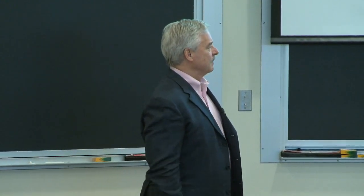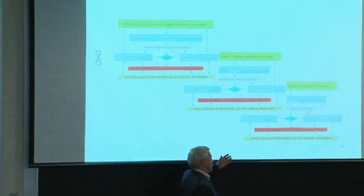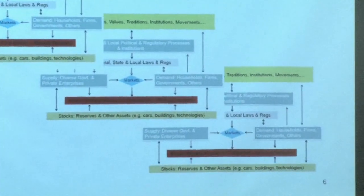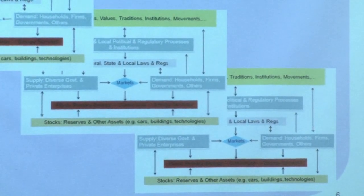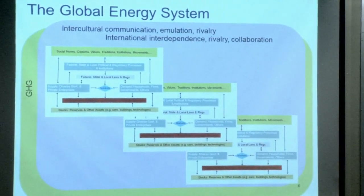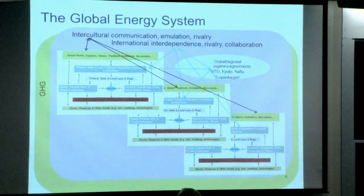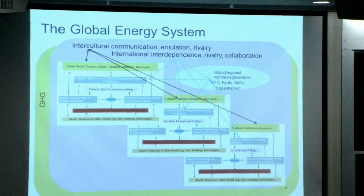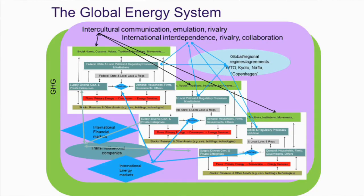There's a global background of cultural communications, rivalry, emulation, and so forth. Greenhouse gases are a global issue. There are international institutions and regimes — the World Trade Organization, climate agreements, NAFTA — that affect the global system. There are international energy markets, international financial markets, and transnational multinational firms that link the global markets. We don't have a single world energy market, but we do have a lot of linkages between national markets.